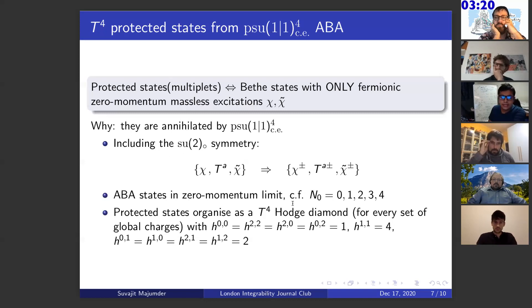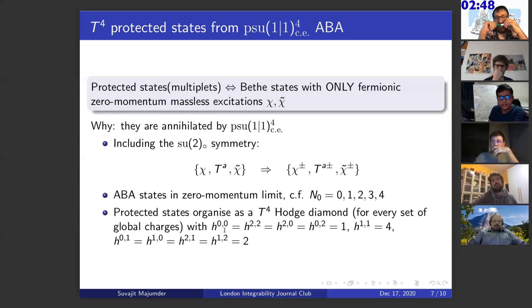We have two copies of PSU(1|1)^4 and ABA. The protected states show up only at the low-lying Bethe states. For N_0 which corresponds to the number of fermion particles, for 0, 1, 2, or 3, or 4 fermion particles only, if we compute the Bethe states and then take this restriction, then we get the protected states. And nicely enough, we see that for T^4, we recover the Hodge diamond for any given set of the global charges, which are parametrized by a parameter called L, putative length of a spin chain. This is the usual T^4 Hodge diamond that we recover by this analysis.